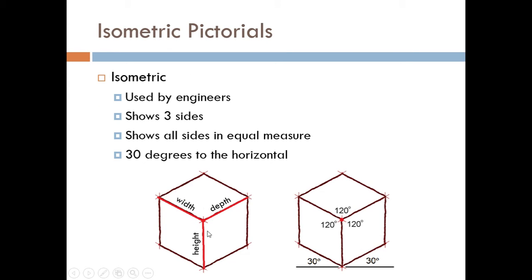It shows all three sides, such as this cube. Notice you have width, depth, and height — all three sides are shown. And each side is equal in measure, so nothing is distorted. If this is one meter, this is one meter, and this is one meter, they'd all be drawn the exact same length.